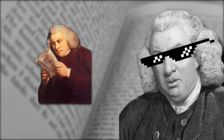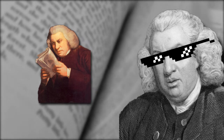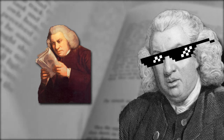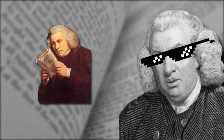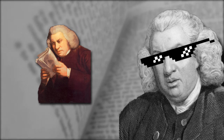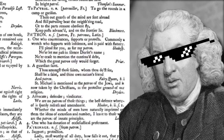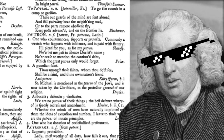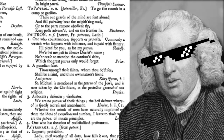Funny side note: Samuel Johnson, the writer of the first comprehensive English dictionary, added some humor to some of his entries. One of these entries made it very clear that he didn't always get along with the patrons supporting his dictionary project. His definition for the word patron went as follows: 'One who countenances, supports, or protects — commonly a wretch who supports with insolence and is paid with flattery.'